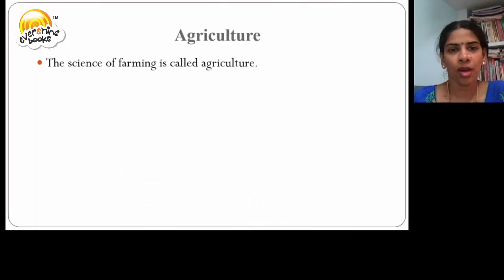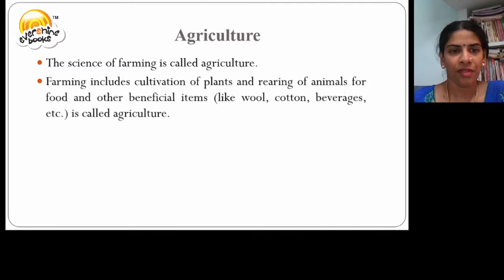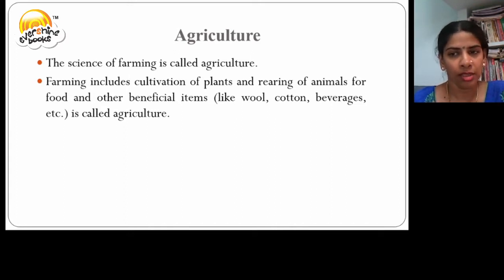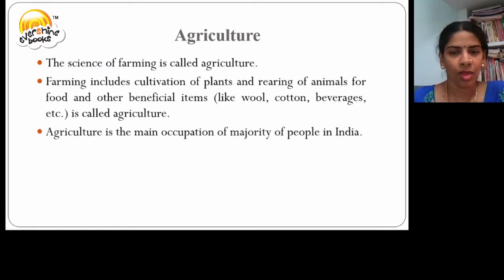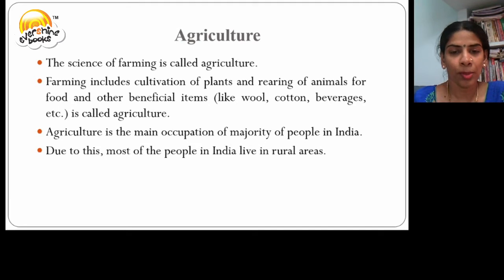The science of farming is called agriculture. Farming includes cultivation of plants, rearing of animals for food, and other beneficial items like wool, cotton, beverages, etc. Agriculture is the main occupation of majority of people in India. Due to this, most of the people in India live in rural areas.